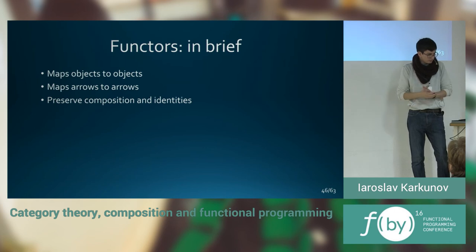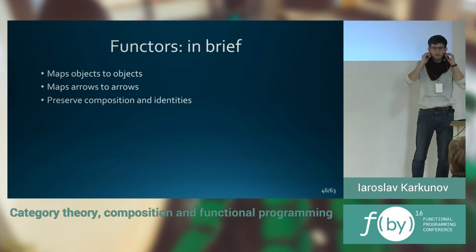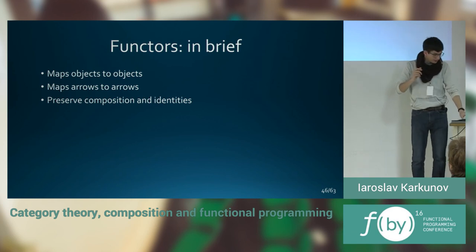Functors also must preserve identities. So that's all. Functors, in brief, are just maps from objects to objects, and arrows to arrows, which preserve composition and identities. And therefore, they are preserving the structure of the category, actually. So they map category to category.